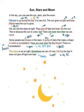The sun is up during the day. It is very hot. The sun gives us light and heat. Plants need the sun to grow.